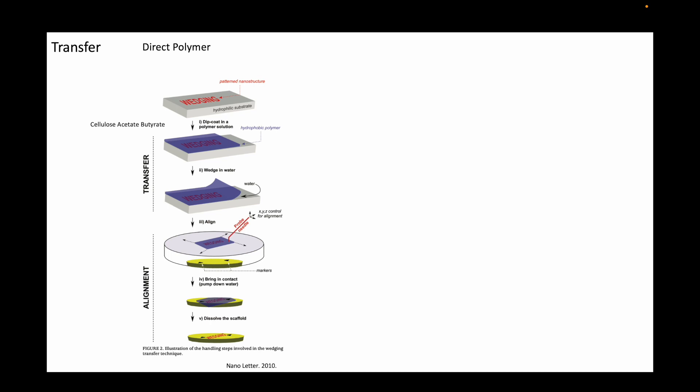The first transfer technique is called the wedging transfer technique, which was also developed in Delft. A thick layer of a hydrophobic polymer, cellulose acetate butyrate, is coated on top of exfoliated graphene.